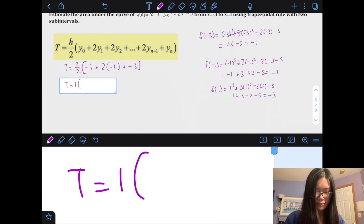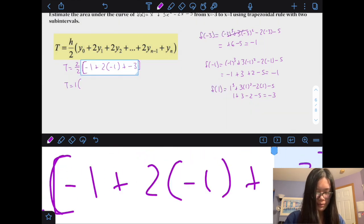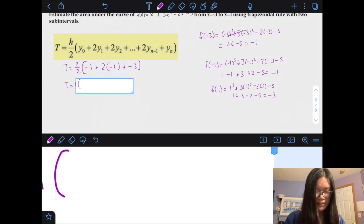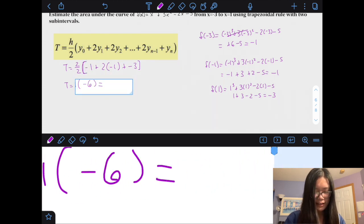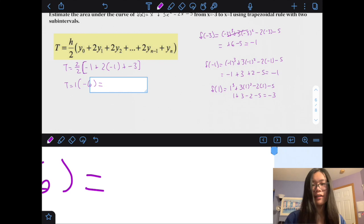So, that's just 1 out front, don't have to really worry about it anymore, negative 1 minus 2 minus 3, negative 6, so the area under that curve, all together, is about negative 6. I don't know, I'll be here.